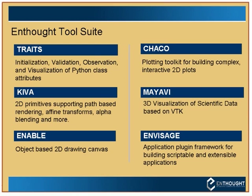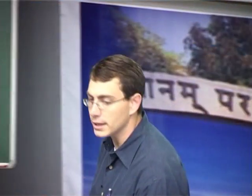Traits is part of the InThought tool suite. Along with SciPy and NumPy, there's also another open source library put out by InThought that has as its base a library called Traits. It provides capabilities such as initialization, validation, observation, and visualization of Python class attributes. Essentially it gives you a nice syntax for describing information about the variables in your classes.